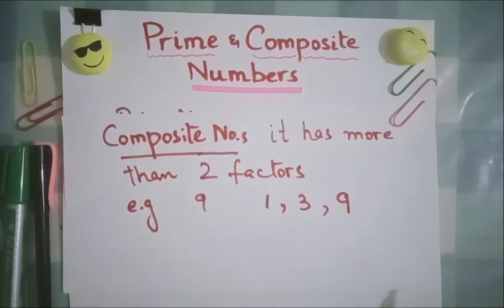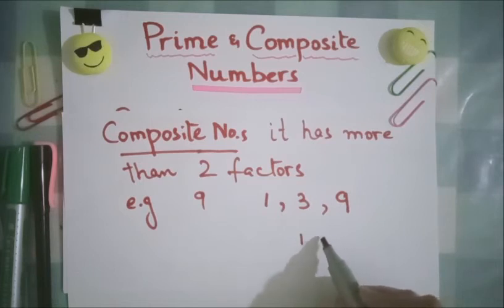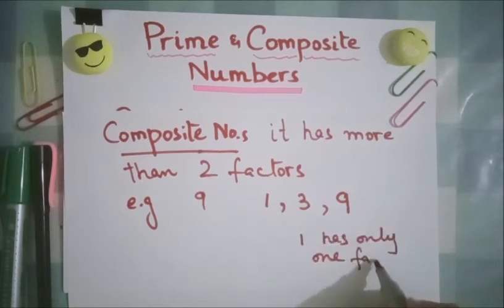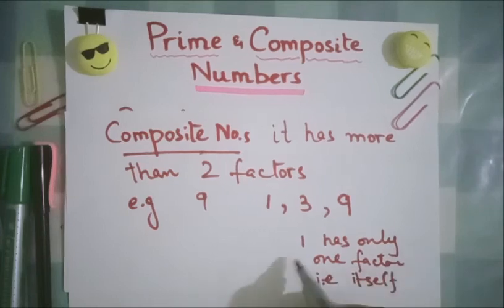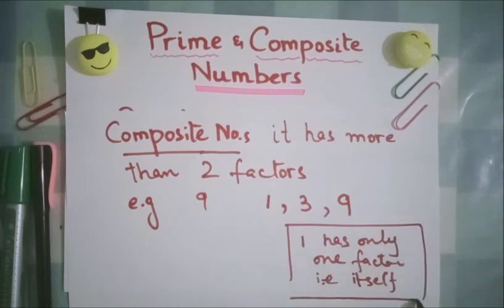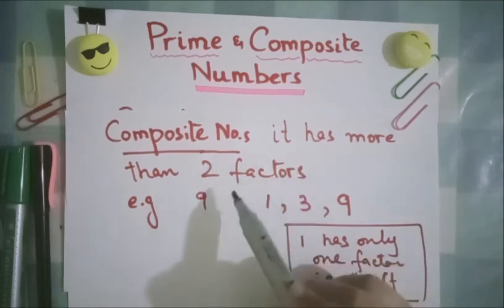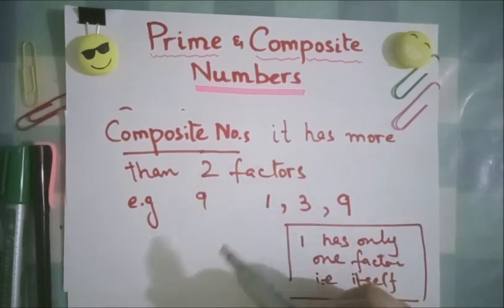Only 1 is the number which has only one factor and that is itself, so it's neither a composite nor a prime. You have to keep this in mind. But the composite numbers are those numbers which have more than